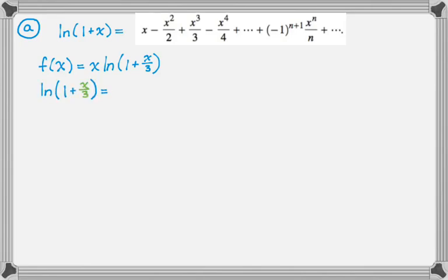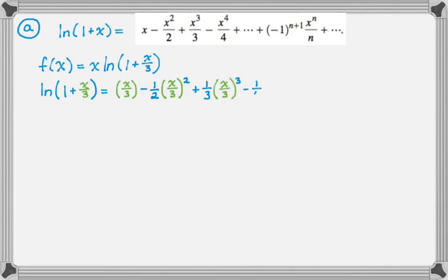First I'm going to build the series for natural log of one plus x over three. I'll take the given series and replace every x with x over three. So that's going to look like x over three, minus one half times (x over three) squared, plus one third times (x over three) cubed, and keep going. The nth term is going to look like negative one to the n plus one, over n, times x over three to the nth power.